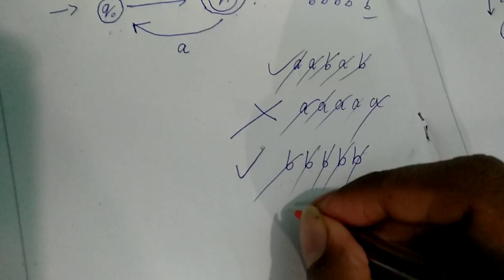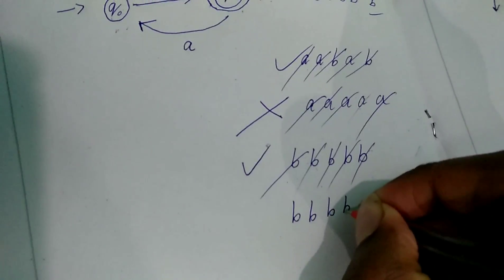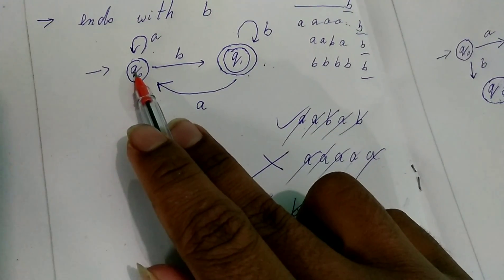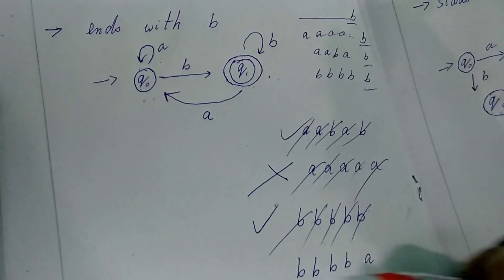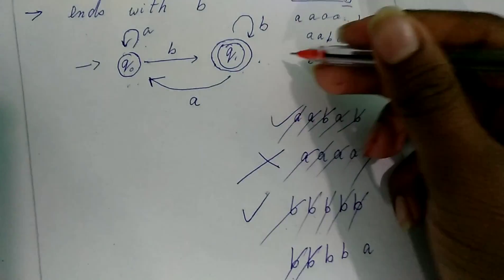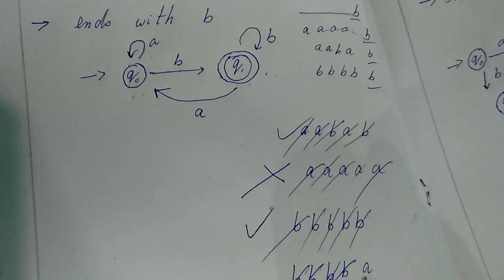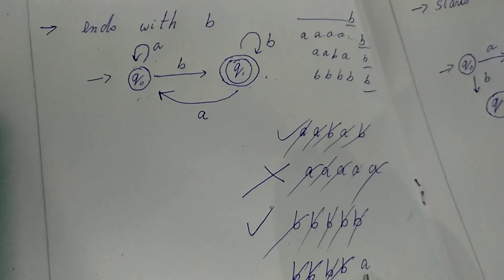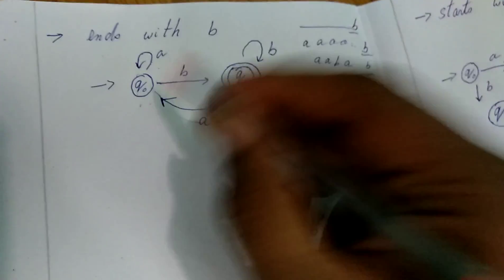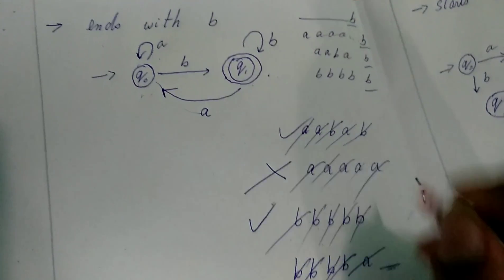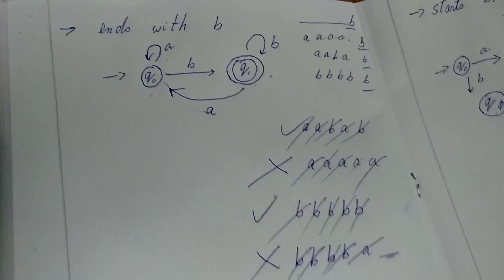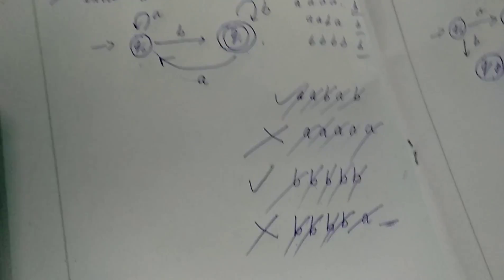Now one more string we are taking: B, B, B, A. Q0 B reaching Q1. B, same state itself. Again B, same state. Again B, same state. But here we are getting last number as A, last string. So from Q1 to A, we are going back to Q0. After that, there is no strings to reach back to the final state. That's why the string will be rejected because it's not in the final state.